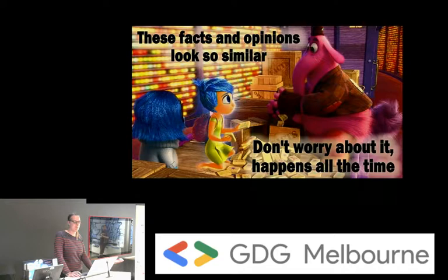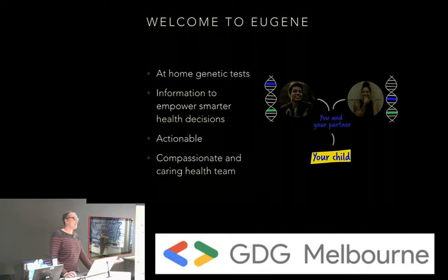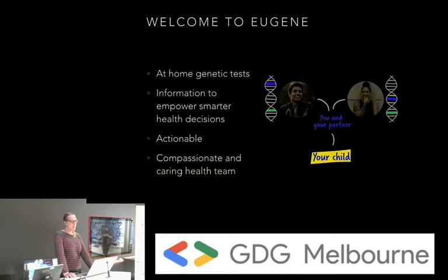So what's Eugene? We offer at-home genetic testing to people who are thinking of starting a family. We want to offer information that empowers smarter health decisions — we want this to be actionable and very compassionate, helping people make smarter health decisions.